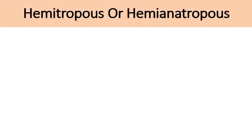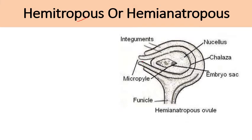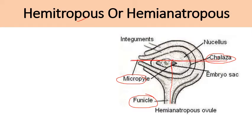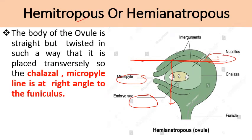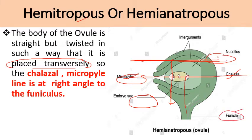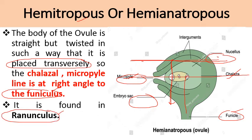Next is the hemitropous or hemianatropous ovule. In this type, the body of the ovule is straight but twisted so that the micropyle and chalaza axis comes at right angles to the funicle. The micropyle and chalazal end lie in the same axis but at right angles to the funicle. This type of ovule is known as hemitropous or hemianatropous, and it is present in Ranunculus, commonly known as the buttercup plant, a member of the family Ranunculaceae.